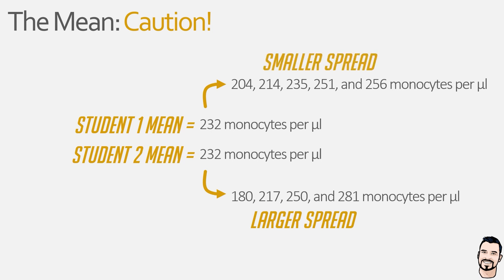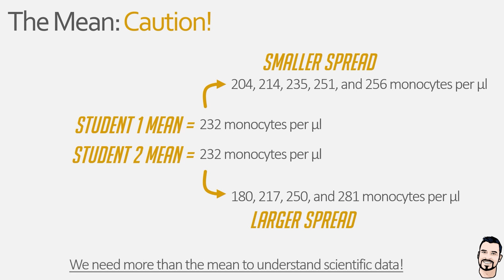Now if we were to just use the mean values to describe the work of these two students, you could come to the conclusion that they have identical data — and as we can see from these examples, that would be the wrong conclusion because the data used by each student is quite different. Therefore, when using the mean to describe experimental results, it should never be used in isolation as it only tells part of a story. Further statistical tests are required to tell us about how spread out our data is around the mean, and that is what the other videos in this series are about.